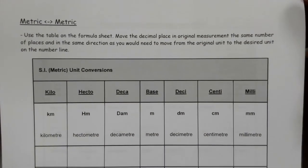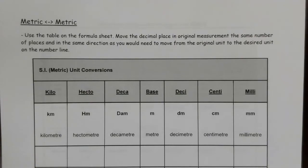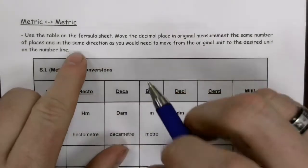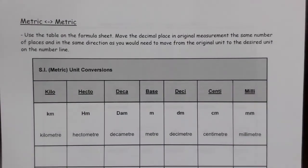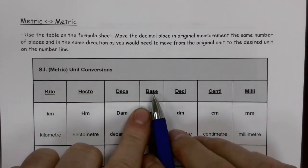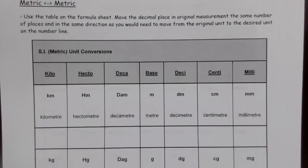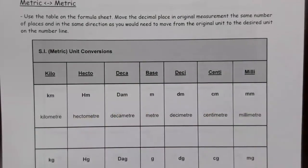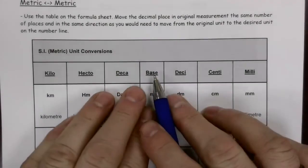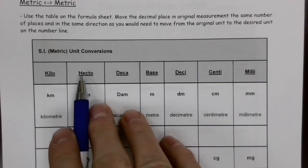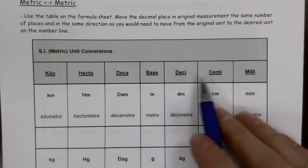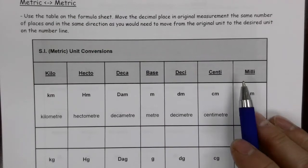For right now, we're going to focus on metric-to-metric conversions. We're going to use the table or formula sheet. To make a conversion, we start with a unit, and every time you move from one unit to another it's going to be either a multiple of 10 or a division by 10. As you go from left to right on the scale, the units get smaller.